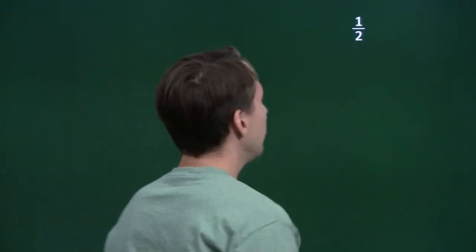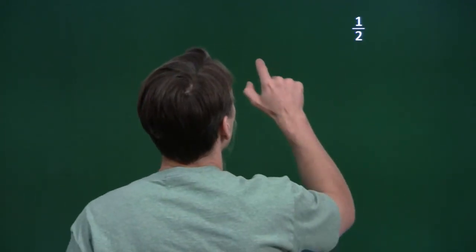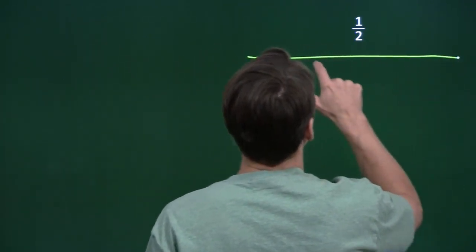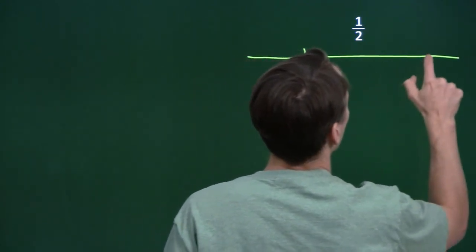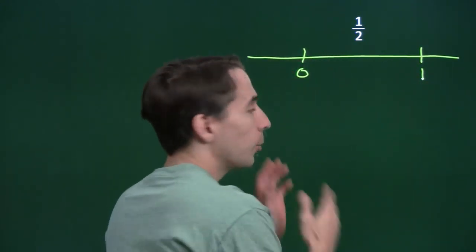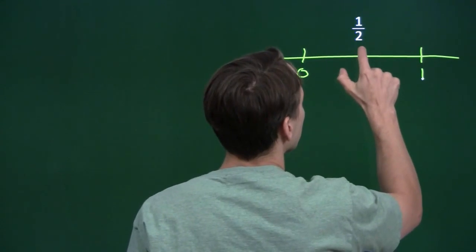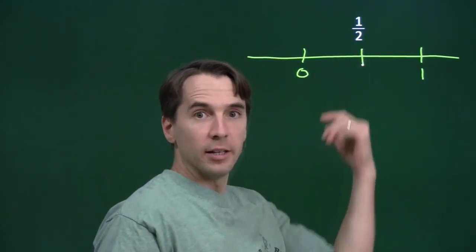We'll start by finding 1 half on the number line. Of course, we know how to do that. Start with our number line, and 0, and 1, and we break this into two pieces. And of course, 1 half is right at the end of the first piece.